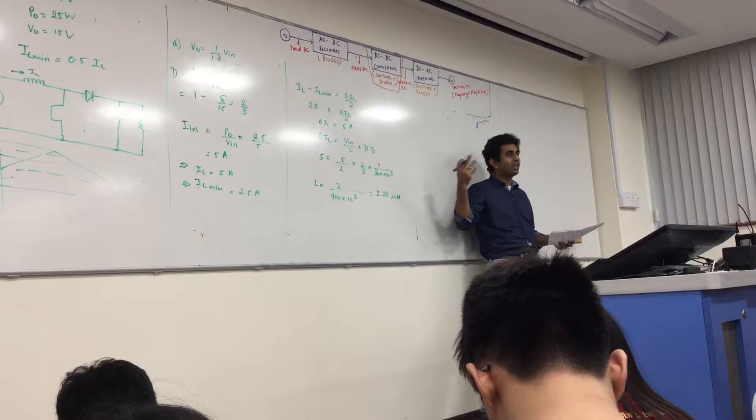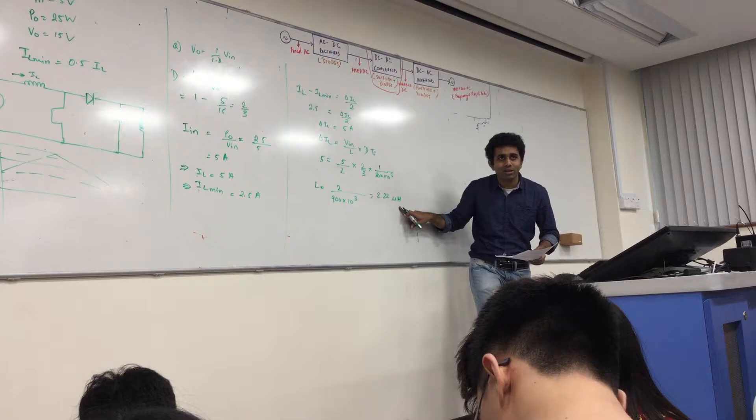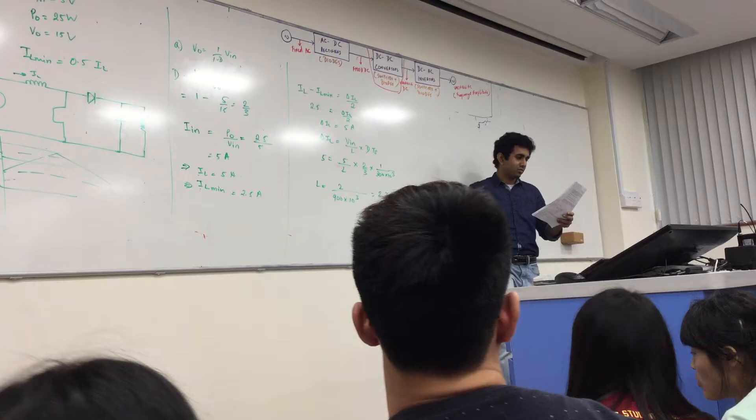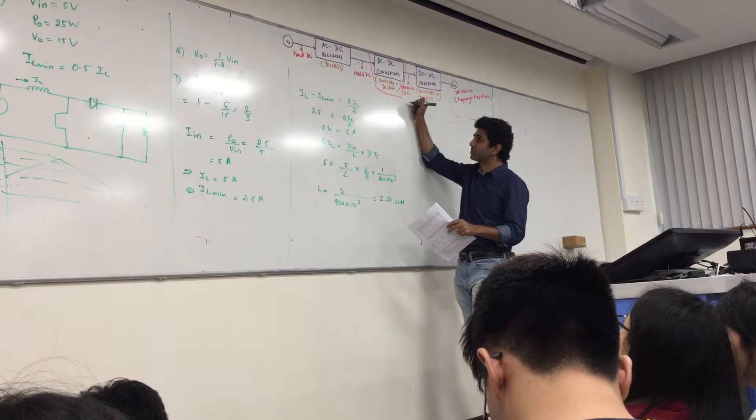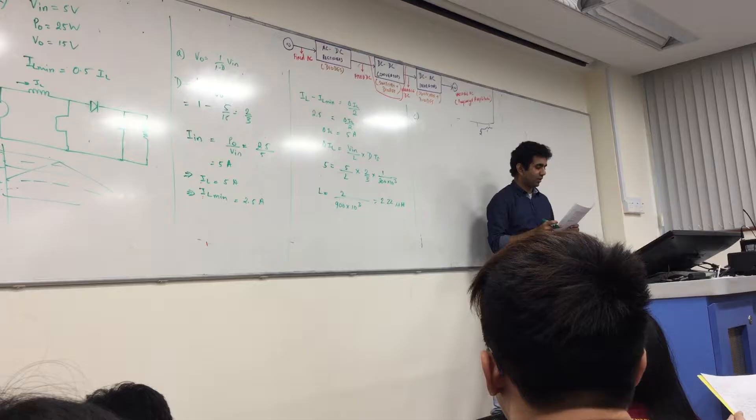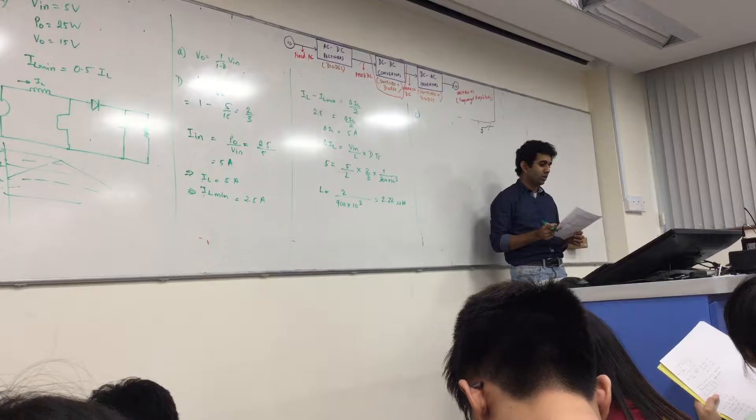What is the unknown factor here? L, right. Everything else is known to us. Can I say L is just 2 by 900 into 10 raised to 3, whatever this value is. So 1 by 450 into 10 raised to 3, so what, 22 something possibly. 22.22 microhenry - and make sure you use the units correctly, please. Inductance can't be Farad, inductance has to be Henry.